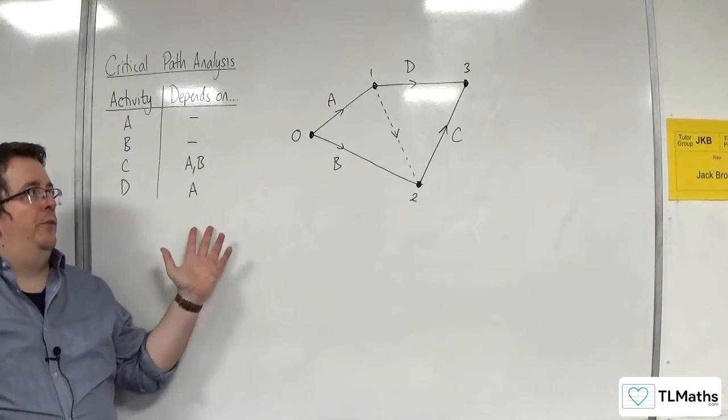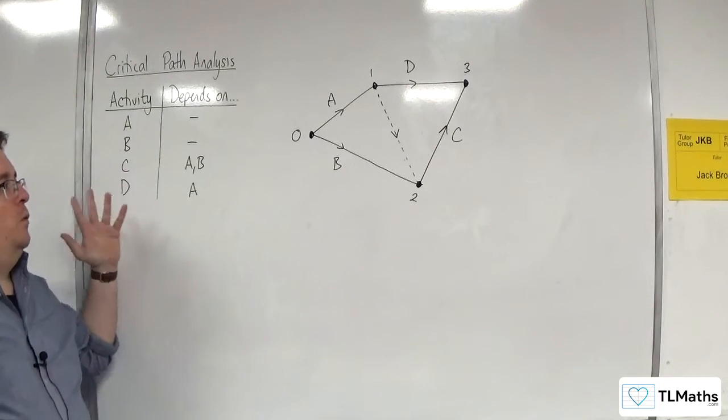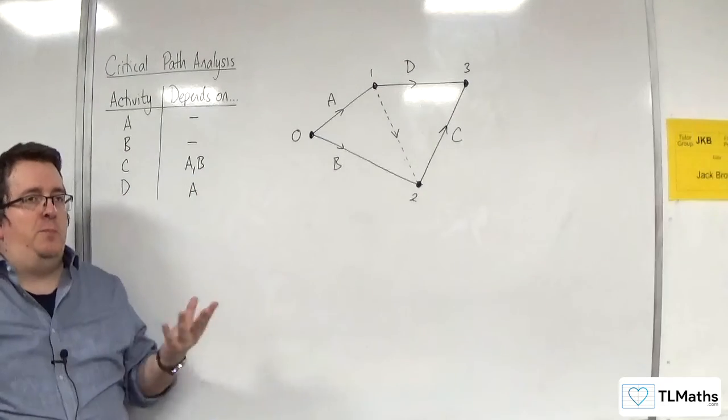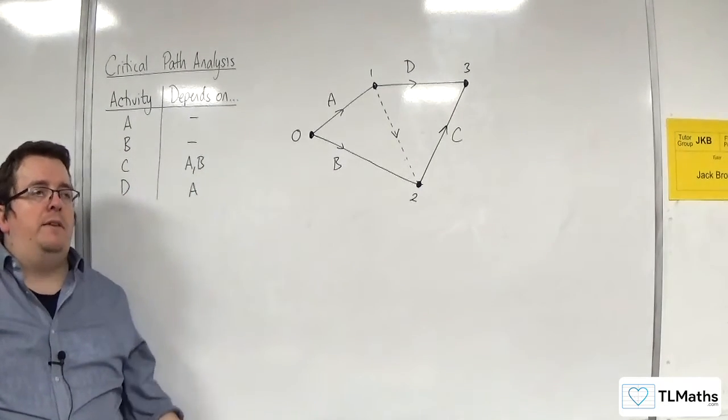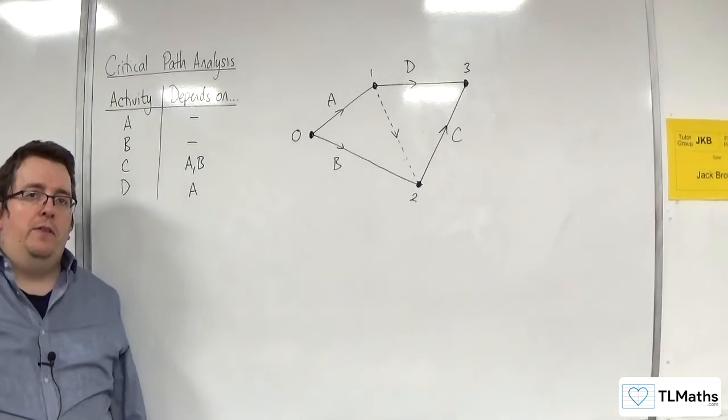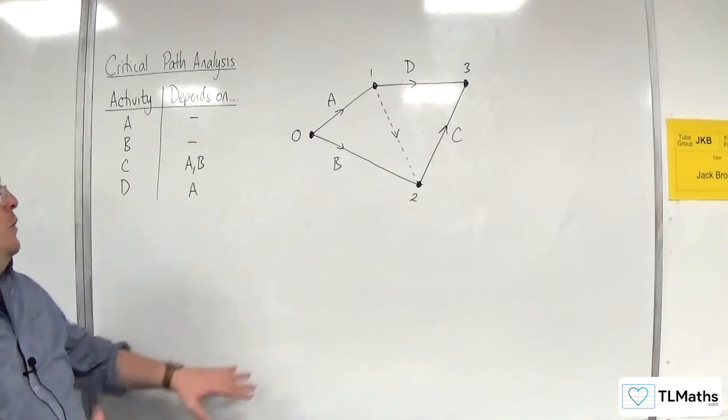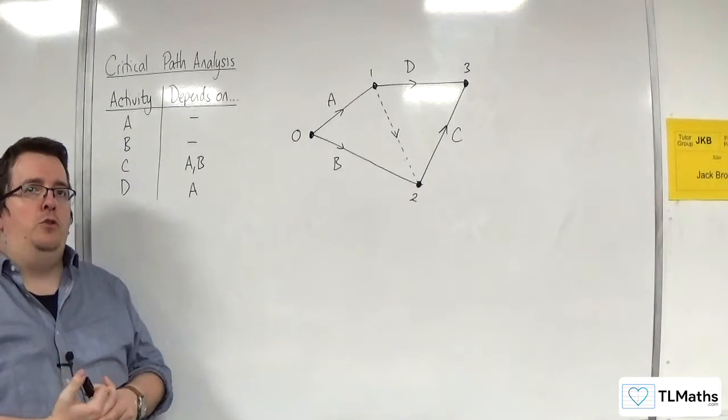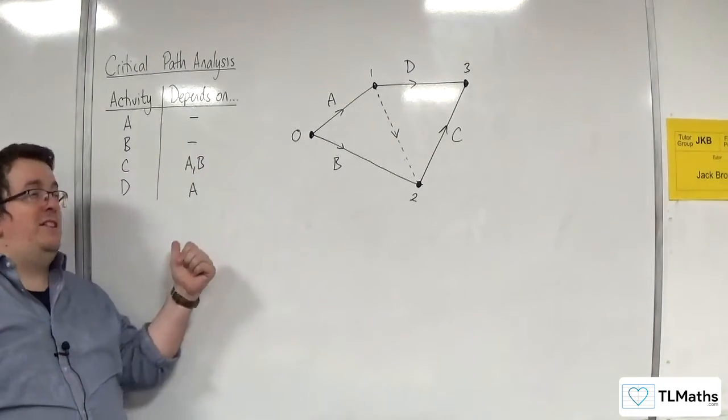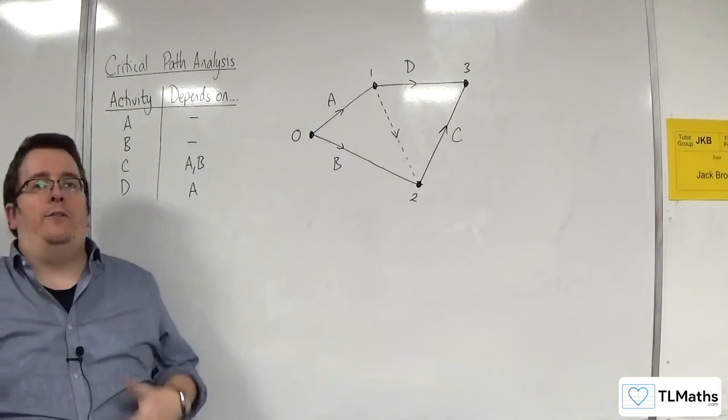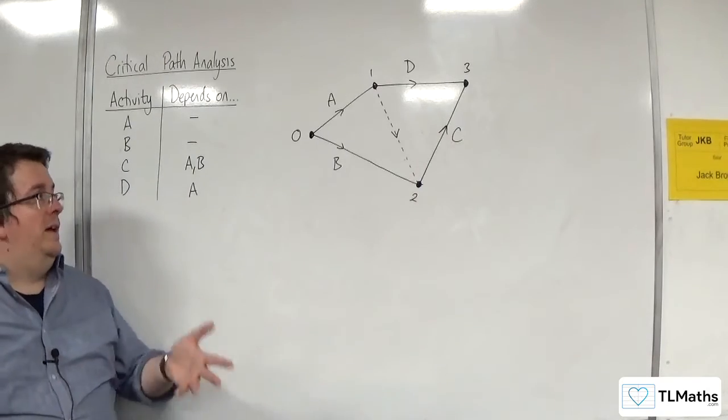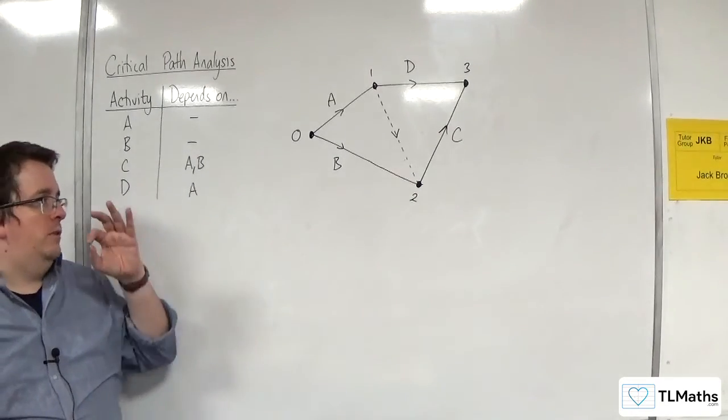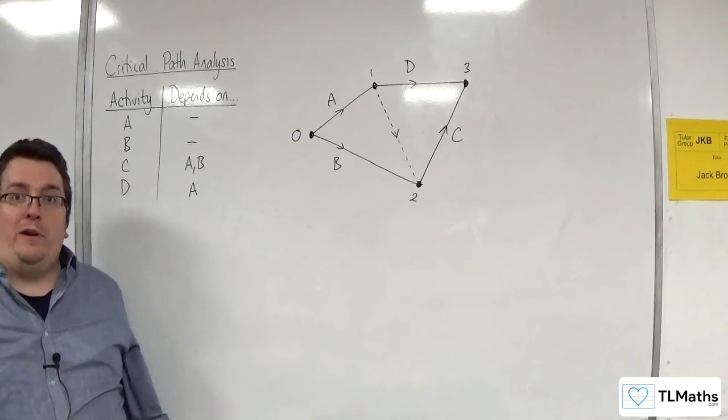Okay, so that is a very simple situation where the dummy activity is required. It's best practice to minimize the number of dummies that are used. So it's quite often that questions linked with this will ask you to draw the activity network based on the precedence table using as few dummies as possible. They might tell you how many dummies are required. So just carefully read the question when you're doing it.